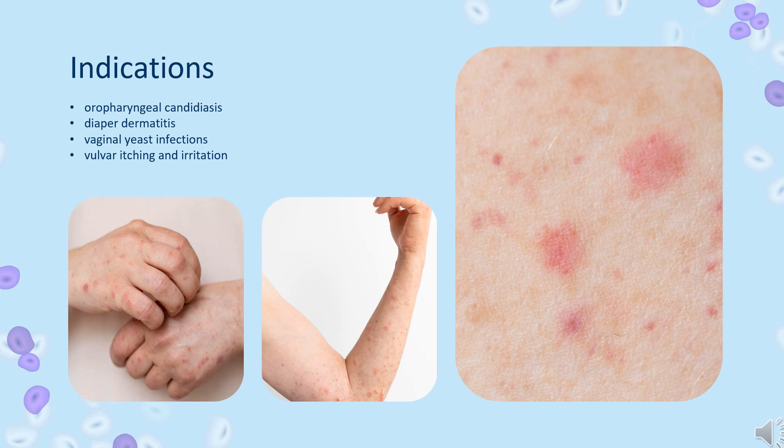What is myconazole used for? Myconazole is indicated for the local treatment of oropharyngeal candidiasis in adult patients and for the adjunctive treatment of diaper dermatitis complicated by candidiasis in immunocompetent patients aged 4 weeks and older. Myconazole is also available as both a suppository and cure for the treatment of vaginal yeast infections and the relief of associated vulvar itching and irritation.